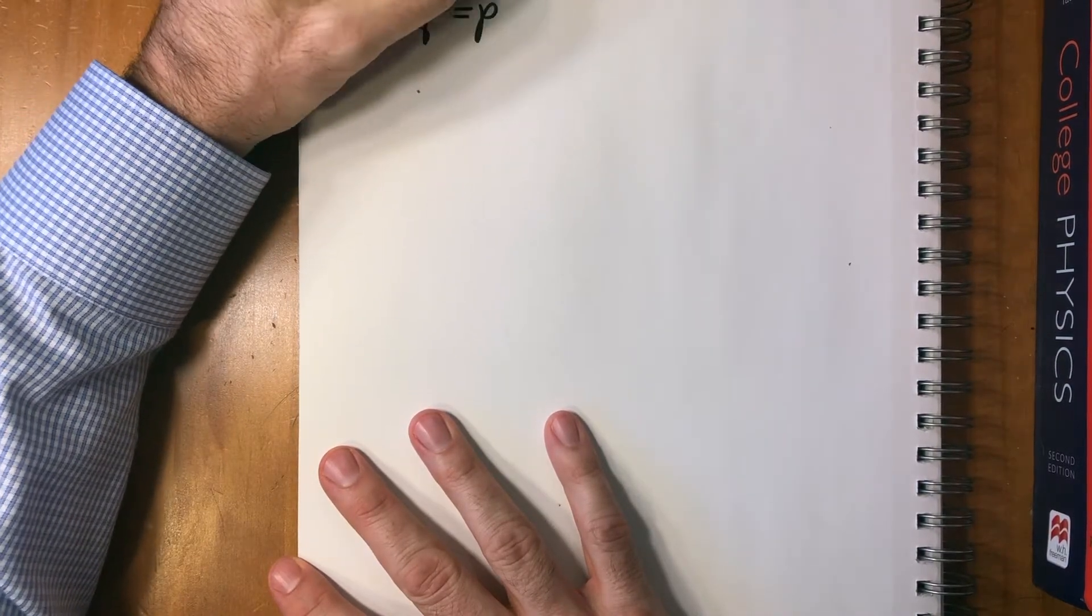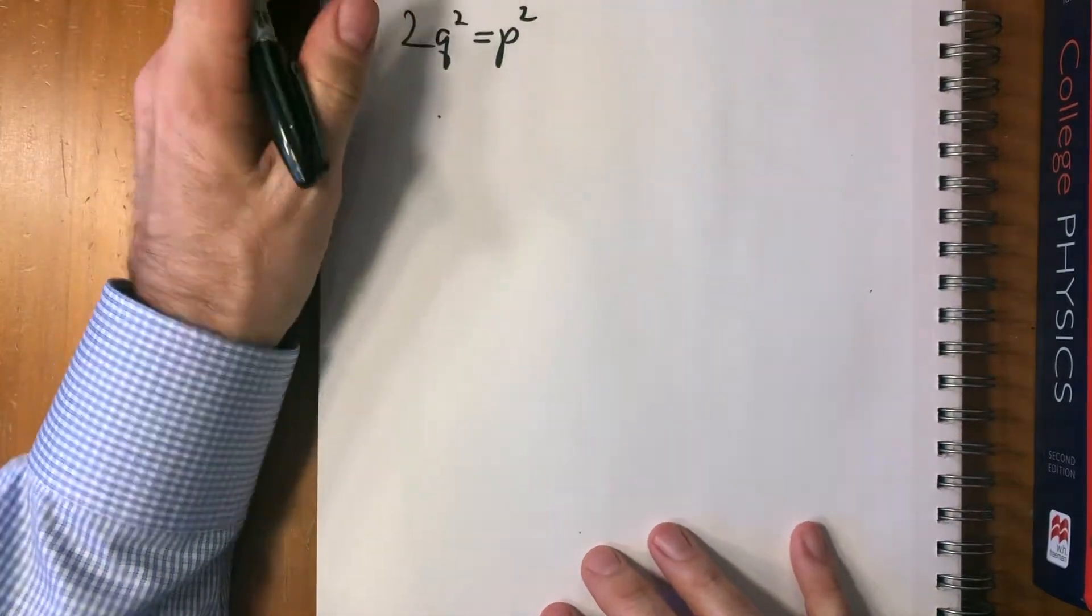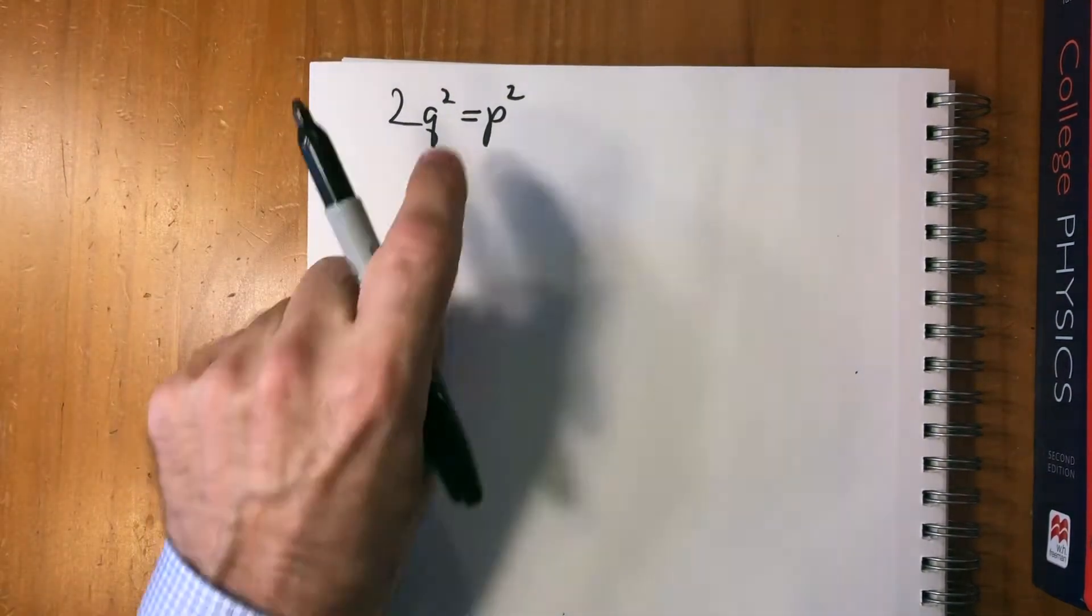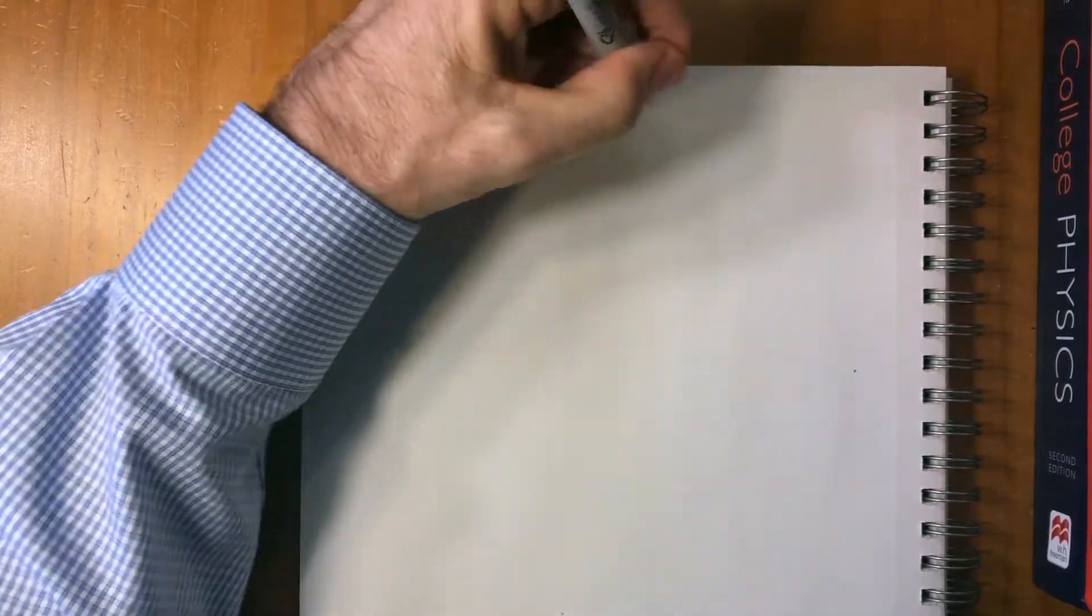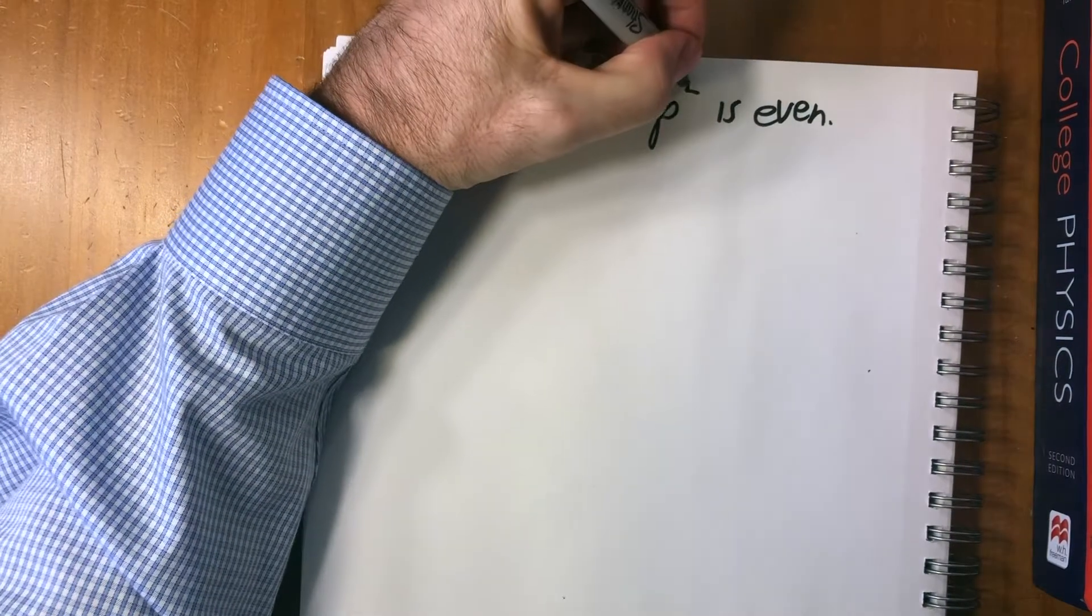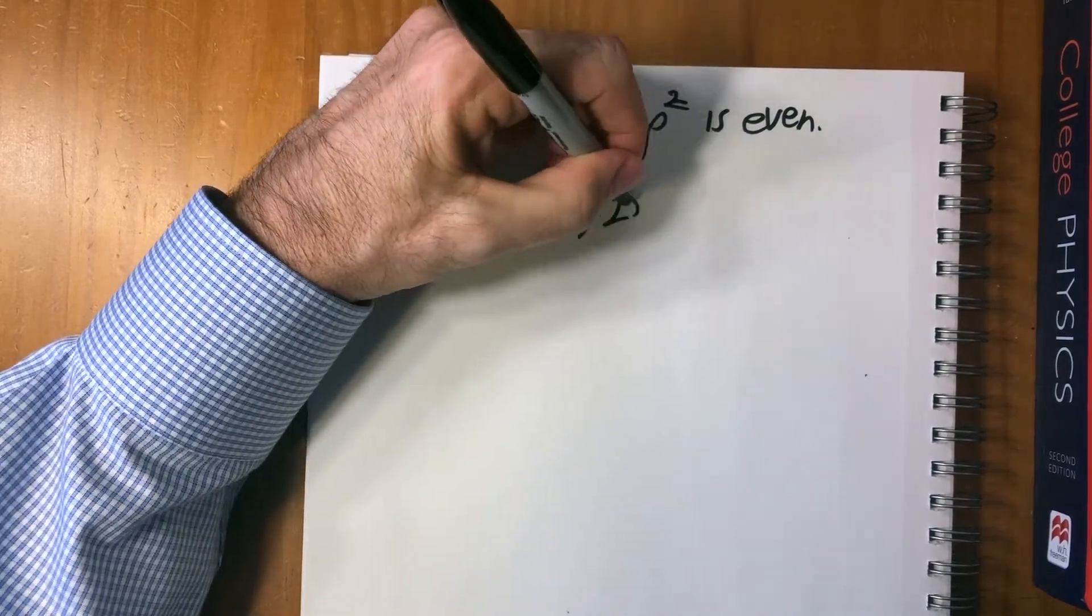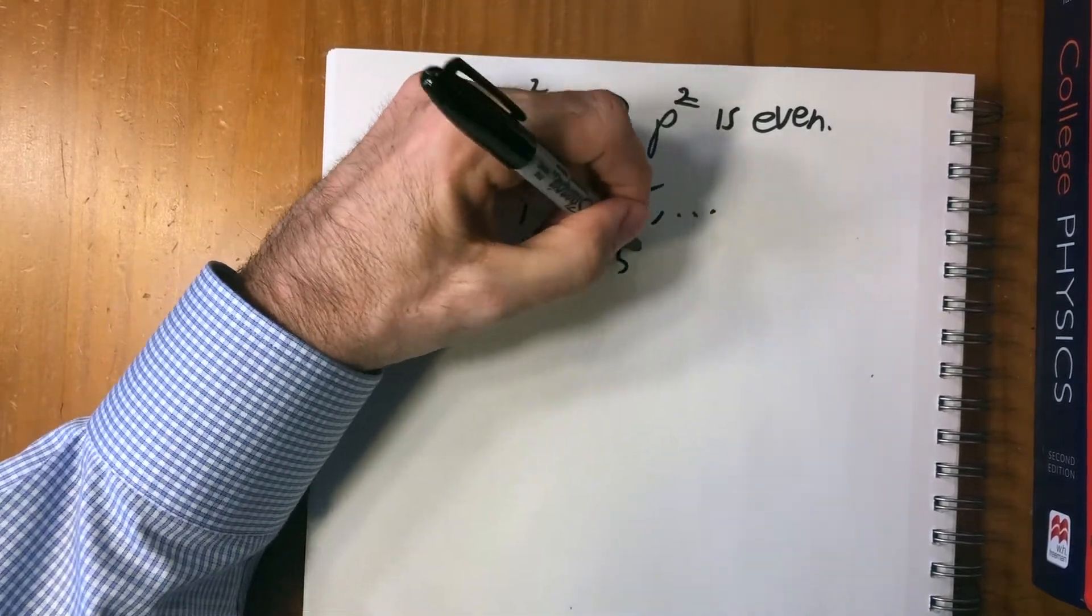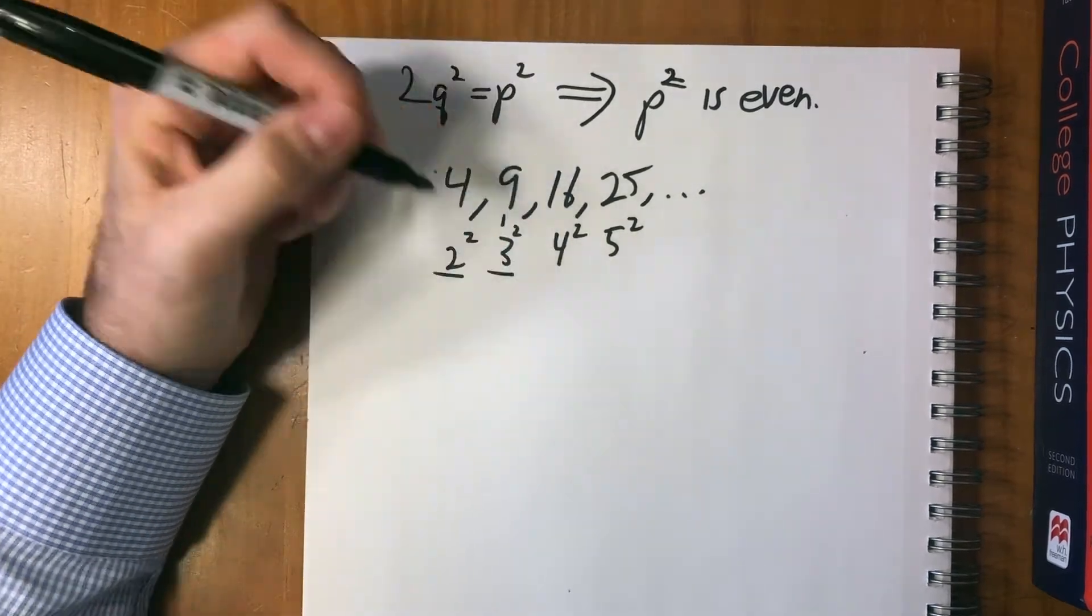2q² = p². Now this means that p² must be even, because every number is either even or odd. Every even number is divisible by two: 2, 4, 6, 8. So if you have any number that has a factor of two, it's even. This means that p² is even. Now if you think about squared numbers, let's just look at them: 4, 9, 16, 25, etc. This one's 2², 3², 4², 5² and so on.